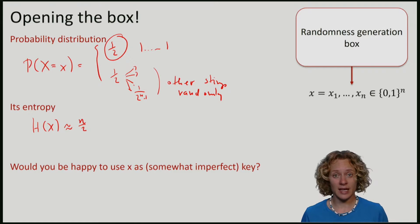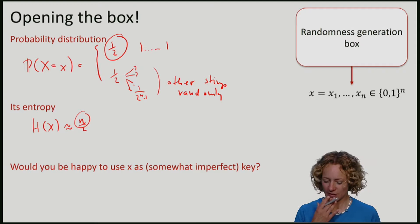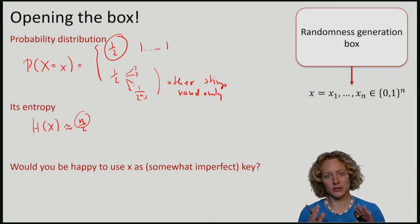Nevertheless, the entropy is huge. In fact, the entropy grows with n, whereas my guessing probability is constant. So the Shannon entropy also does not seem to be a very good measure for randomness.